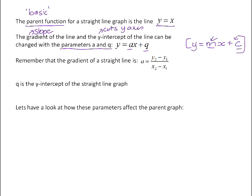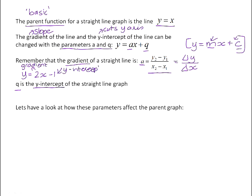In grade 9 you would have learned this as y equals mx plus c. It's no different with a and q — a is replacing m and q is replacing c. We use a and q to standardize, because we're going to learn a whole lot of new graphs that don't use m and c in particular. But you are welcome to use m and c if you prefer. So y equals ax plus q: the gradient is the a value, and if you ever need to calculate a, you use the formula change in y divided by change in x. q is the y-intercept, so given y equals 2x minus 1, the 2 is the gradient and the negative 1 is the y-intercept — you can read those values straight from the equation.